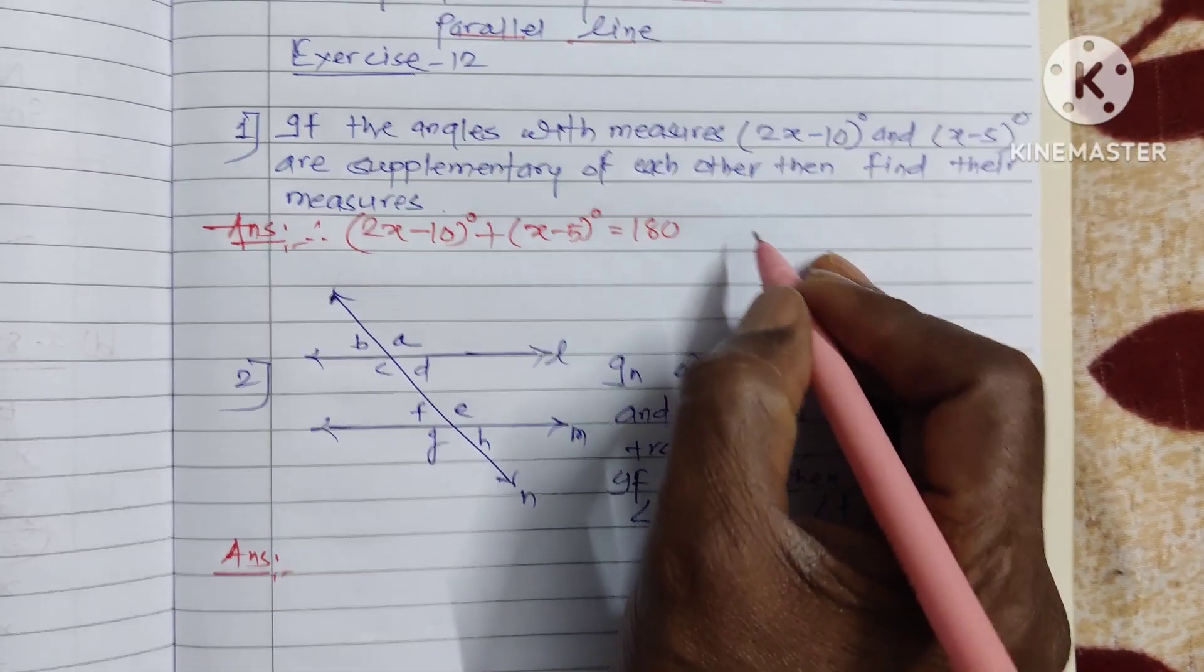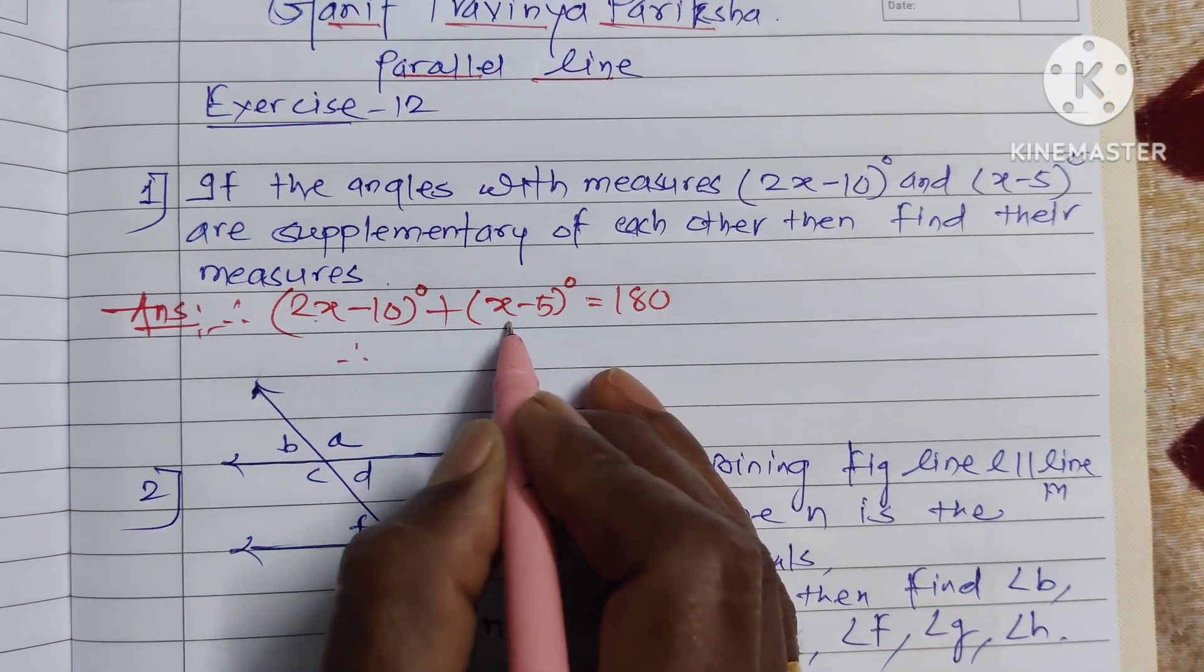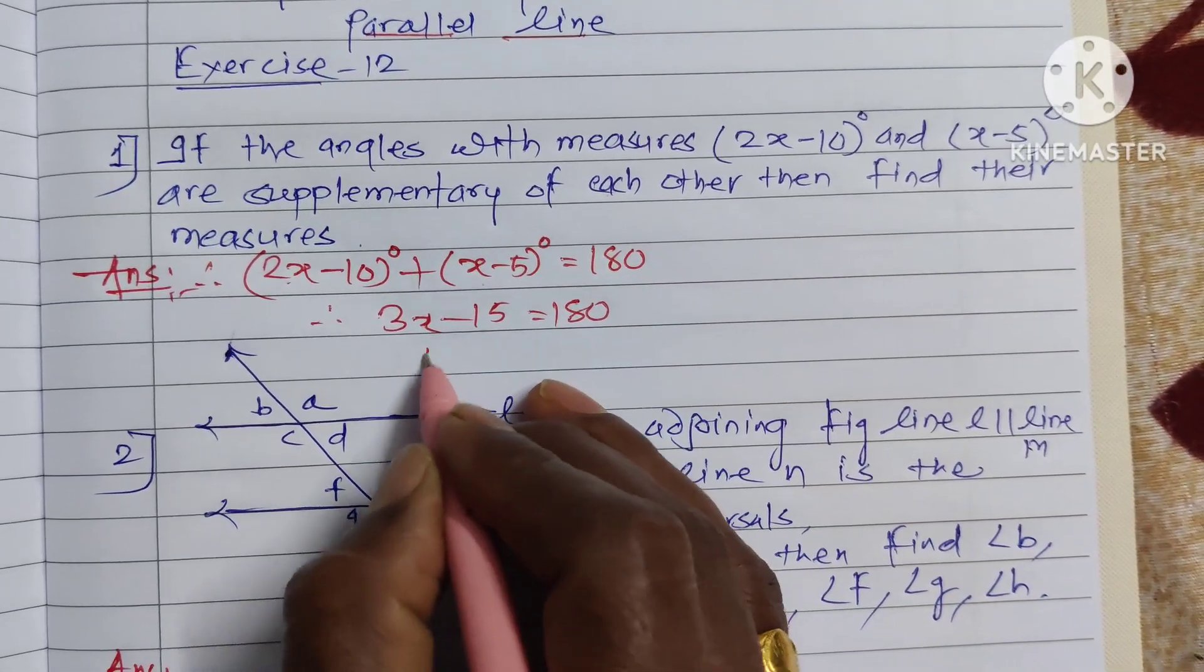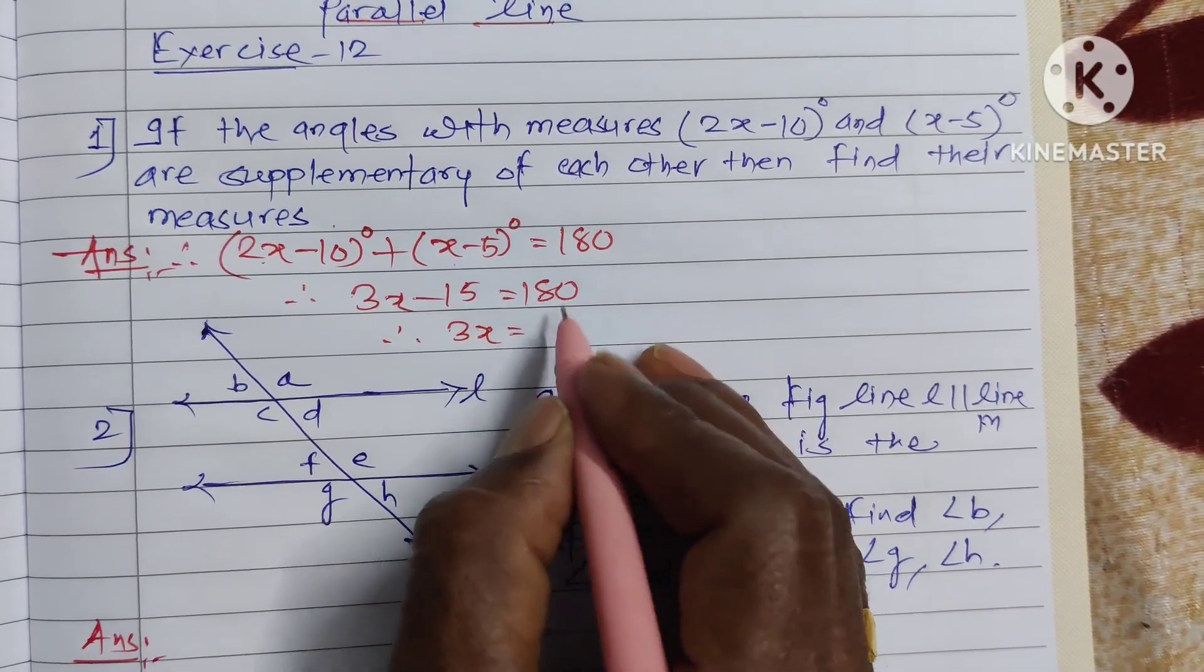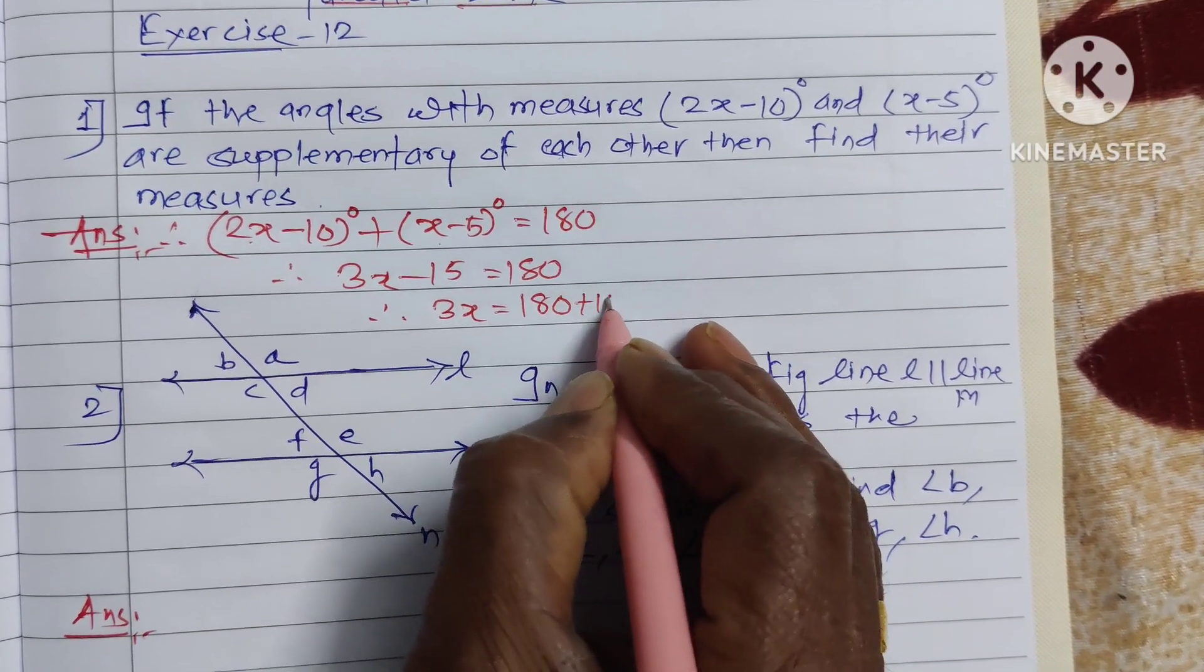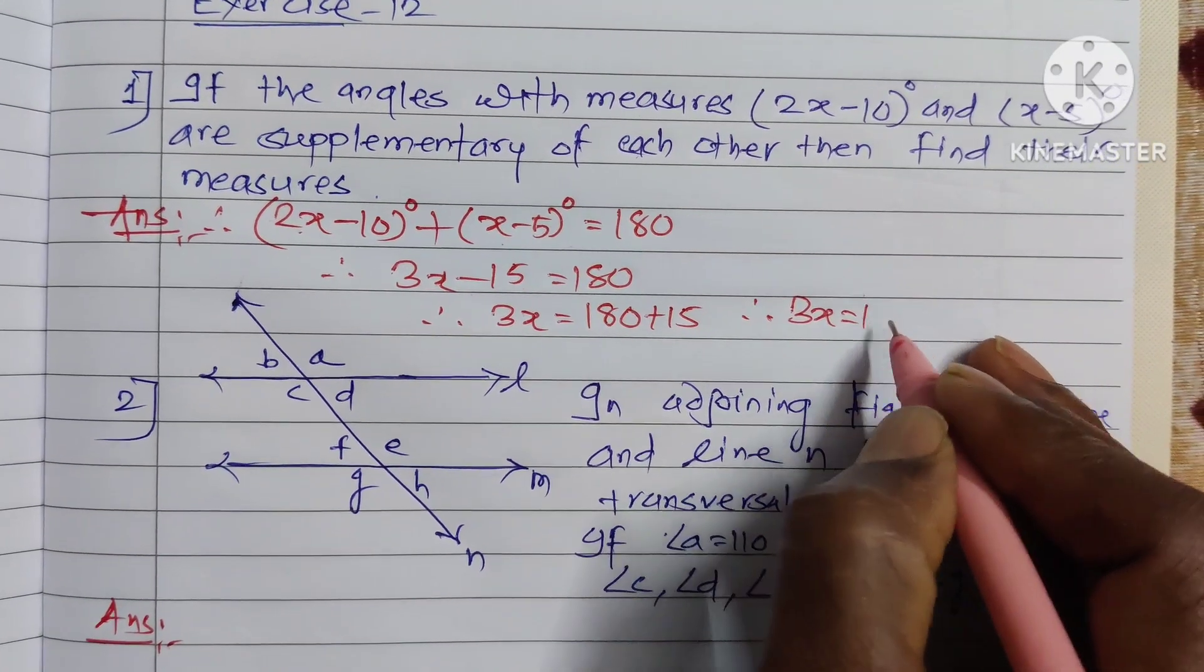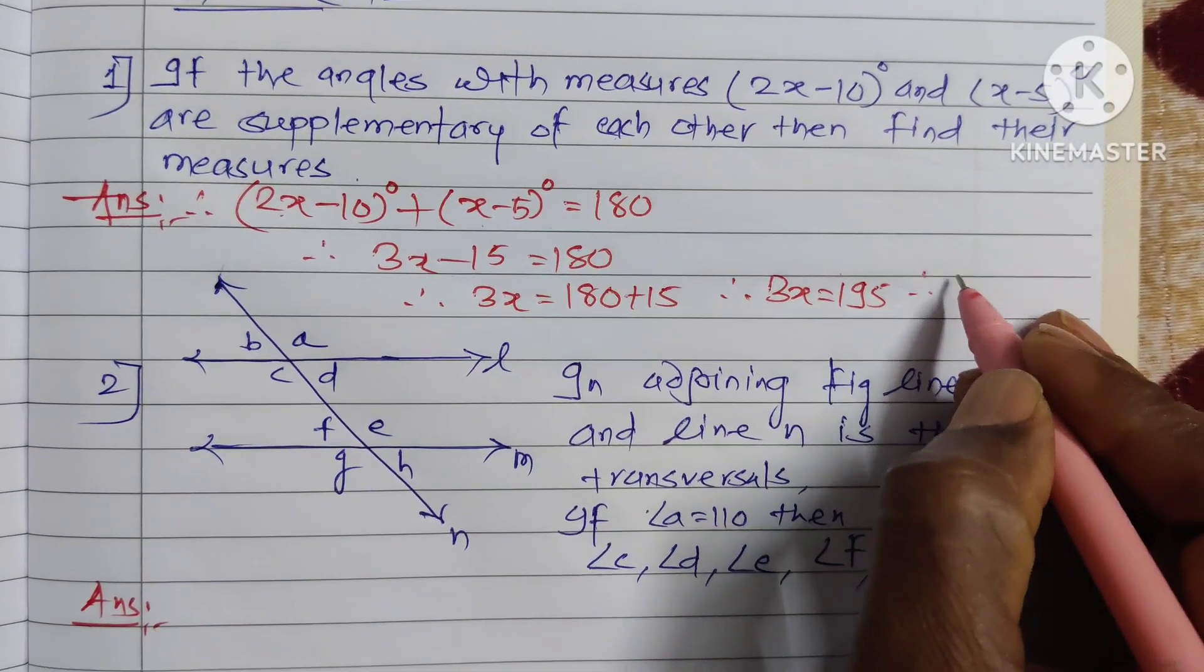Because they are supplementary, therefore here 2x plus x equals 3x minus 15 equal to 180. Therefore 3x is equal to 180 plus 15, therefore 3x equal to 195.